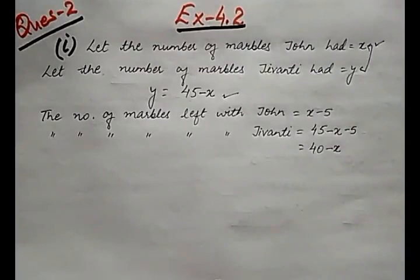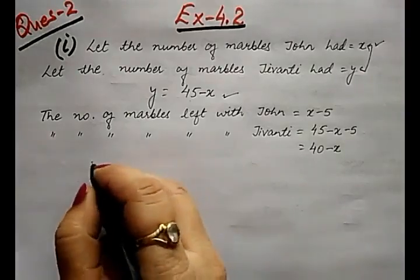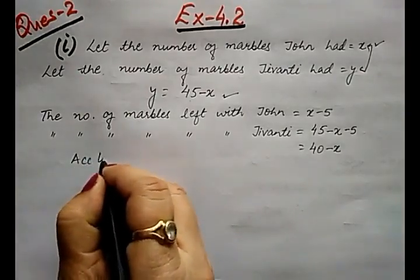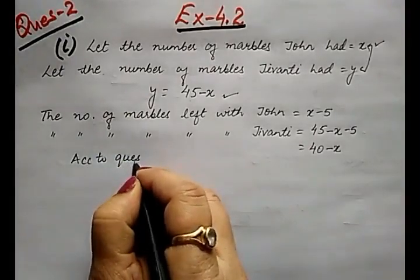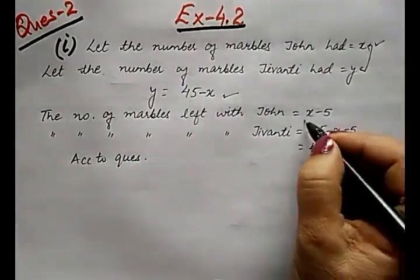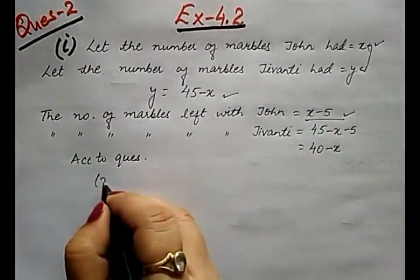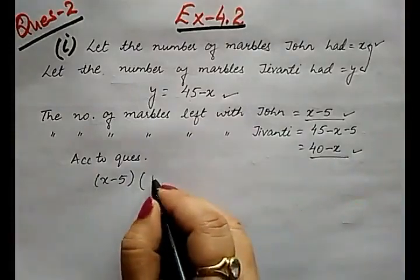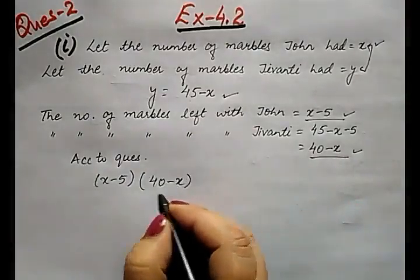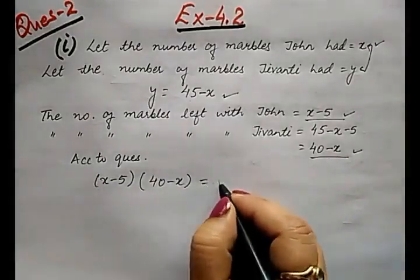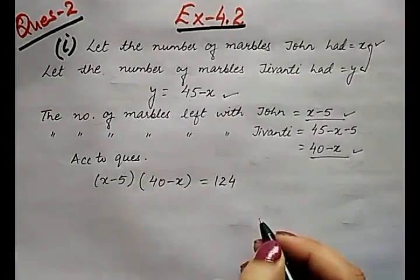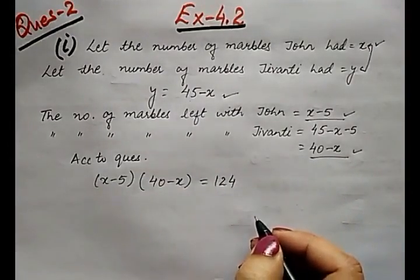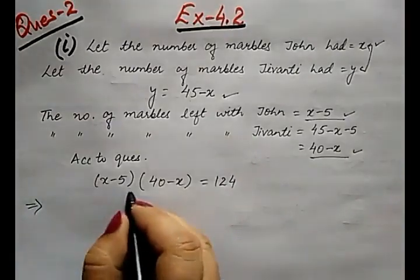According to the question, the product of number of marbles they now have is 124. That is, according to quotient, the equation becomes: marbles John has after losing, x minus 5, into 40 minus x equals 124. This is given to you. So let us simplify this.